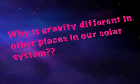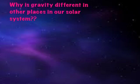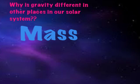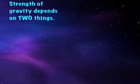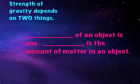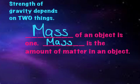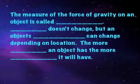So here's a question: why is gravity different in other places in our solar system? There are two reasons — mass and distance. The strength of gravity depends on two things. Mass of an object is one. Mass is the amount of matter in an object.